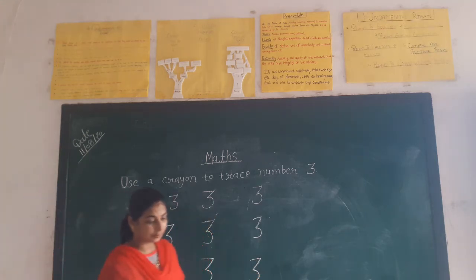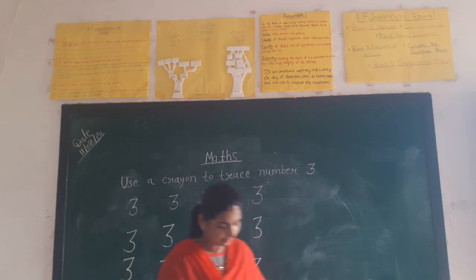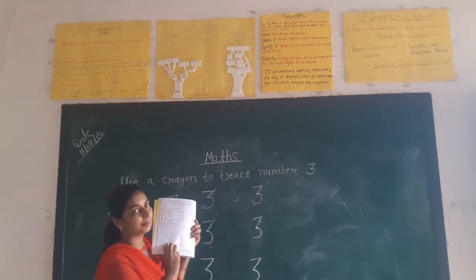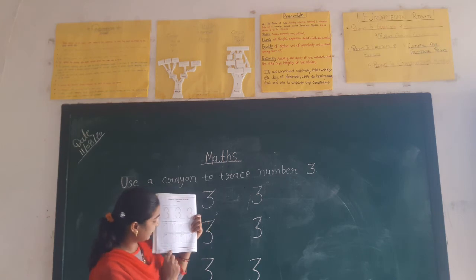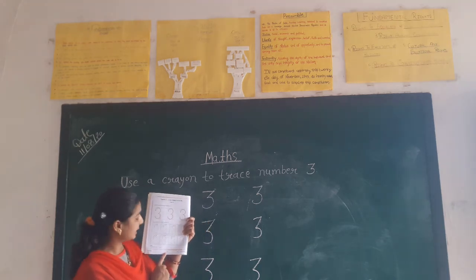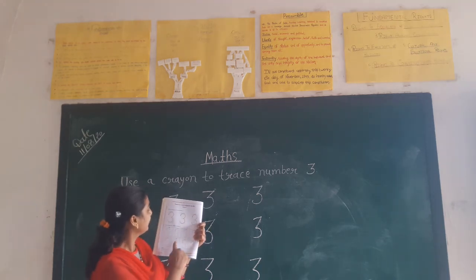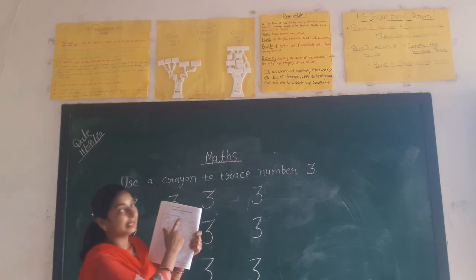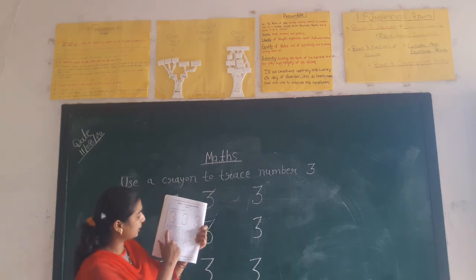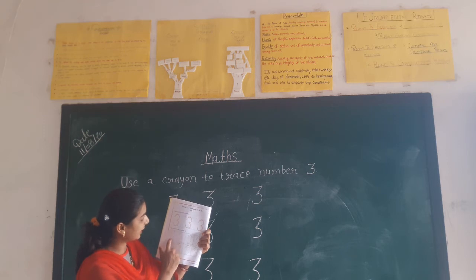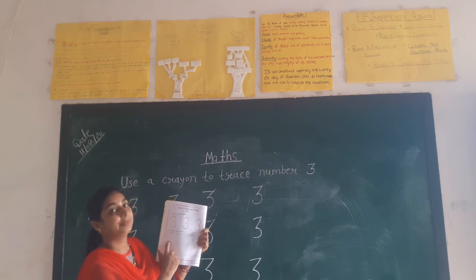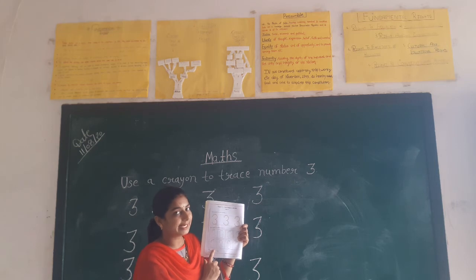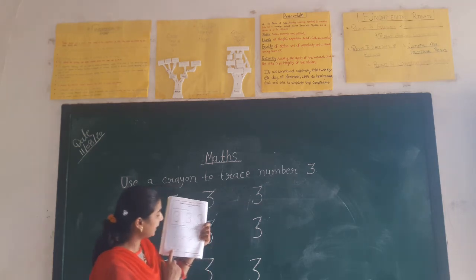This is your books. Open your books. Page number 6. Look at the number 3. You can trace number 3 and round the page. Number 3, right. Okay?